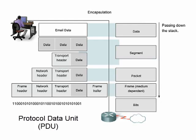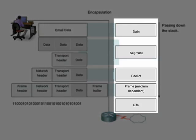During encapsulation, each layer wraps the PDU that it receives from the layer above with its own specific information. At each stage of the process, a PDU has a different name to reflect its new appearance. The PDUs are named according to the protocols of the TCP/IP model. As we look to the right of this graphic, we can see the names of the PDUs.